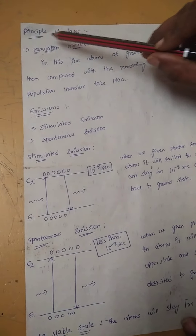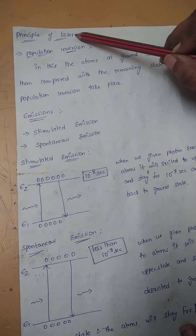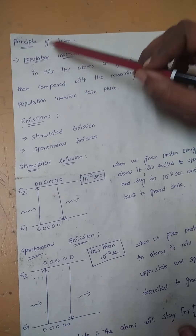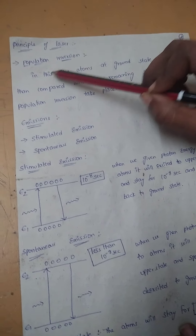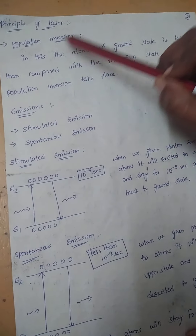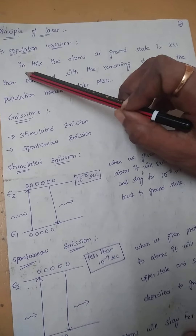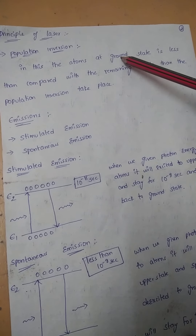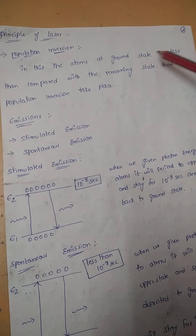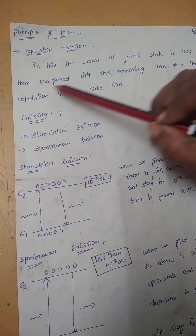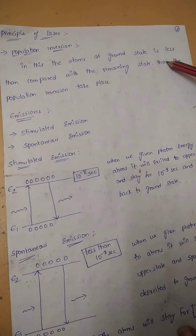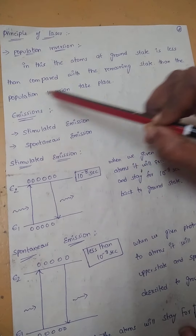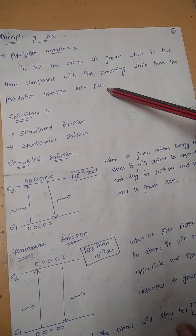Now we will see about the principle of laser. Laser is based on the principle of population inversion. Population inversion means the number of atoms at the ground state is less compared with the remaining excited states. Then population inversion takes place.